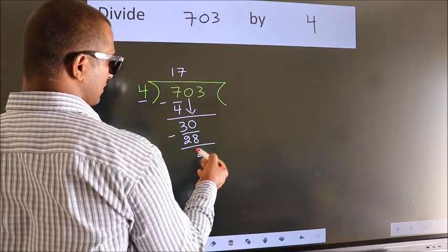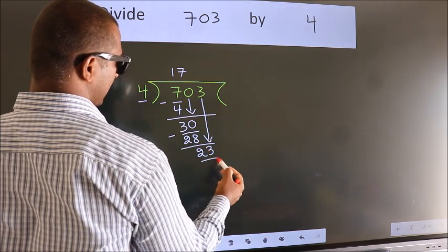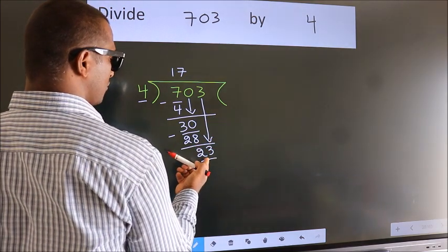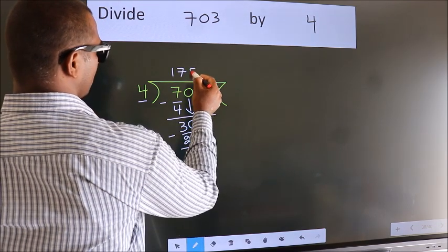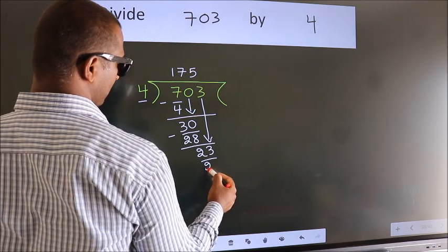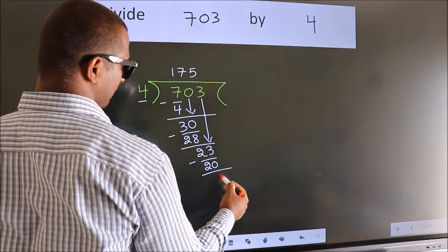After this, bring down the beside number. So, 3 down. So, 23. A number close to 23 in 4 table is 4 fives 20. Now we subtract. We get 3.